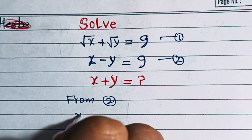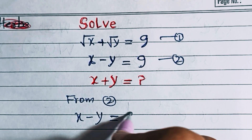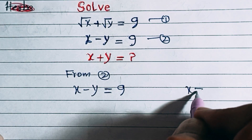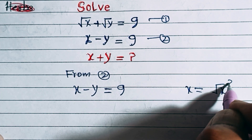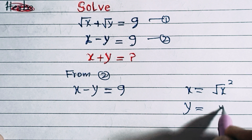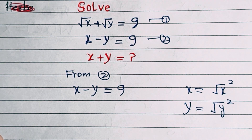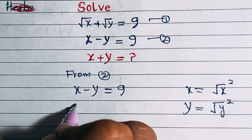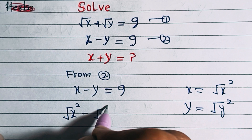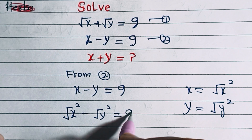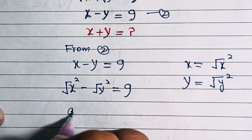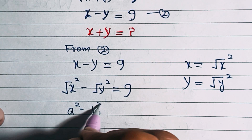From equation number two we have x - y = 9. Now x can be written as (√x)² and y can be written as (√y)². So we have (√x)² - (√y)² = 9. This is a difference of squares, which is of the form a² - b² = (a + b)(a - b).